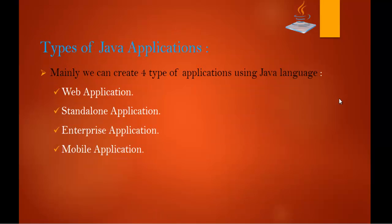Coming to the next slide, this is very important: the types of Java applications. We can create four types of applications using Java. The first type is the web application — an application that runs on the server side and creates dynamic pages. Currently, technologies such as Servlet, JSP, Struts, and JSF are used for creating web applications in Java.